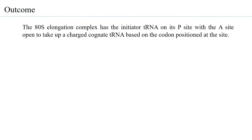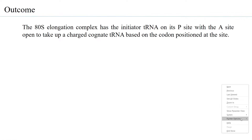As soon as the 80S initiation complex is formed due to a regulatory mechanism, an 80S elongation complex is formed which would have the initiated tRNA on its P site, and the A site is free for a cognate tRNA to come and position itself depending on the codon that is present at the A site.